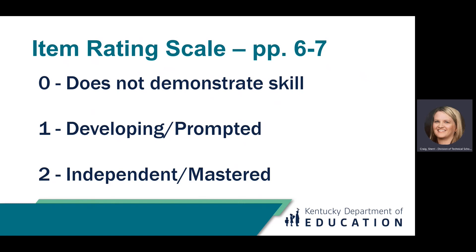Two is the response for skills that the student clearly has mastered and performs independently. To be rated as two — independent or mastered — the student must demonstrate the skill consistently over time. The student does not have to demonstrate the skill every time, but over the course of instruction the student has shown mastery without being prompted. Note that the student may use some type of support. A student who has independently asked for a support and/or uses a support independently while demonstrating a skill can be rated as a two. For example, if a student uses a visual calendar as a support and independently asks for or uses it to complete a task, the student can be rated two. If the student is prompted to use the visual calendar, the student would be rated as a one.